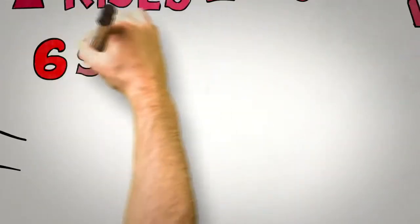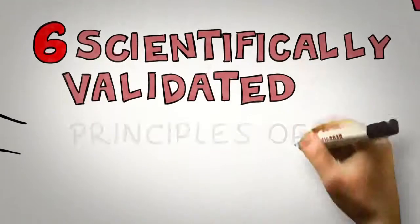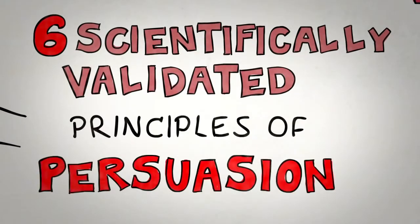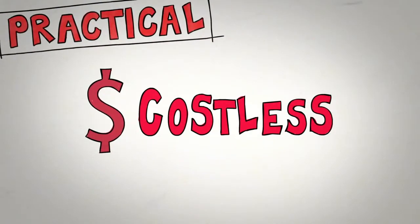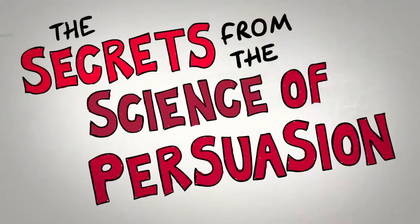So there we have it, six scientifically validated principles of persuasion that provide for small, practical, often costless changes that can lead to big differences in your ability to influence and persuade others in an entirely ethical way. They are the secrets from the science of persuasion.